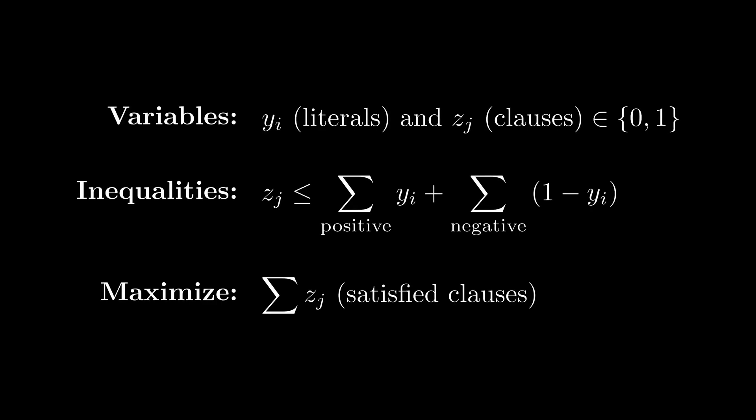Writing the linear program formally, we have binary variables for literals and clauses, inequalities for each clause, and an objective function as the sum of clause variables. Since the problem is the variables being integer, let's just relax them to allow real numbers from 0 to 1. This will make the linear program fast again, but it won't be solving MAX-SAT anymore, since the variables can now be any number from 0 to 1.